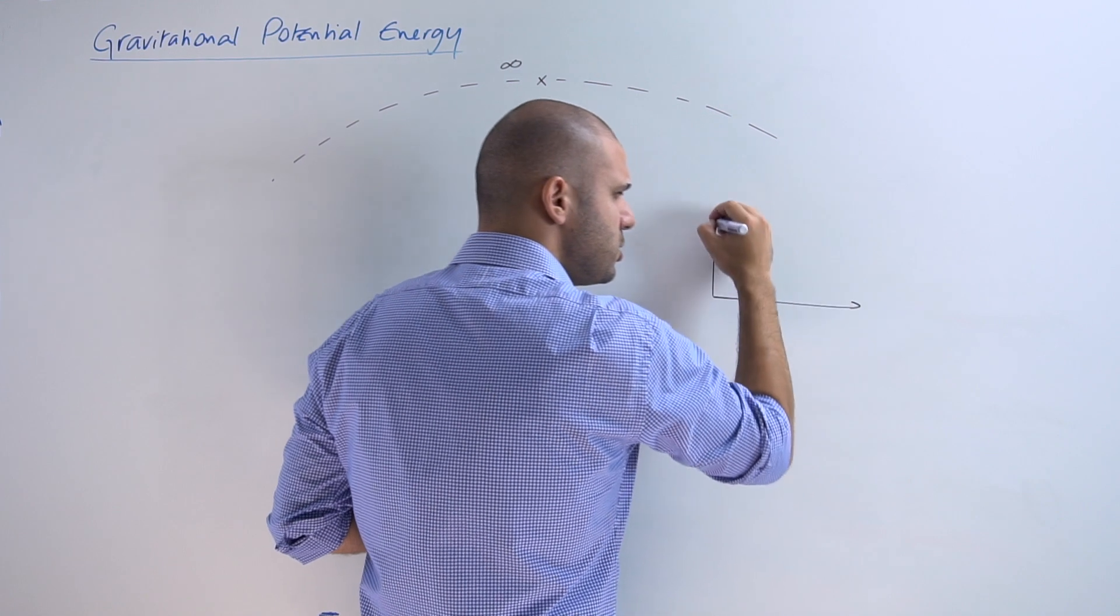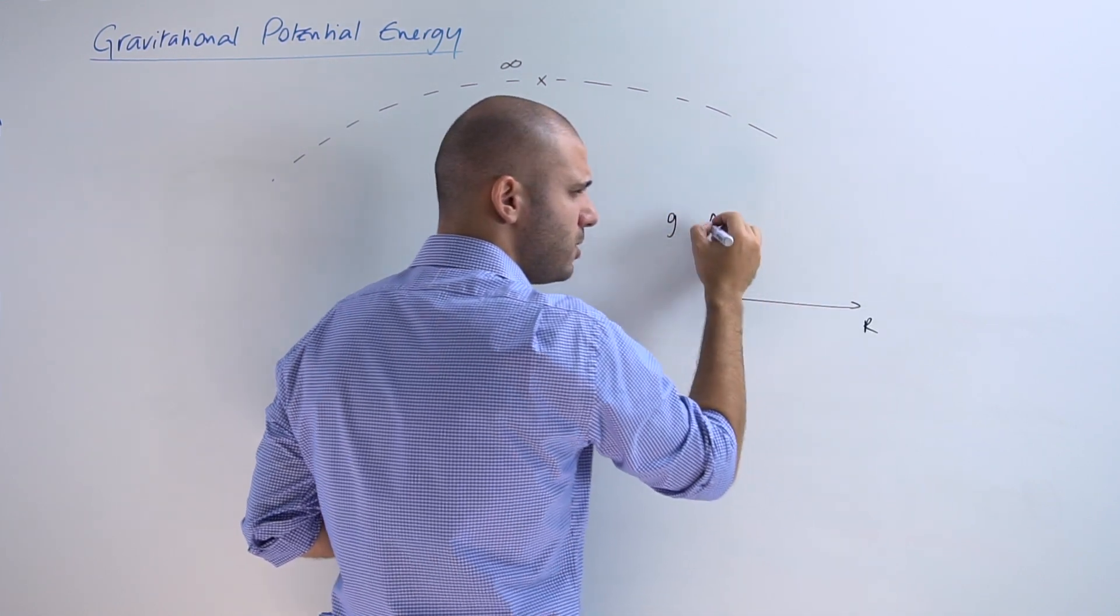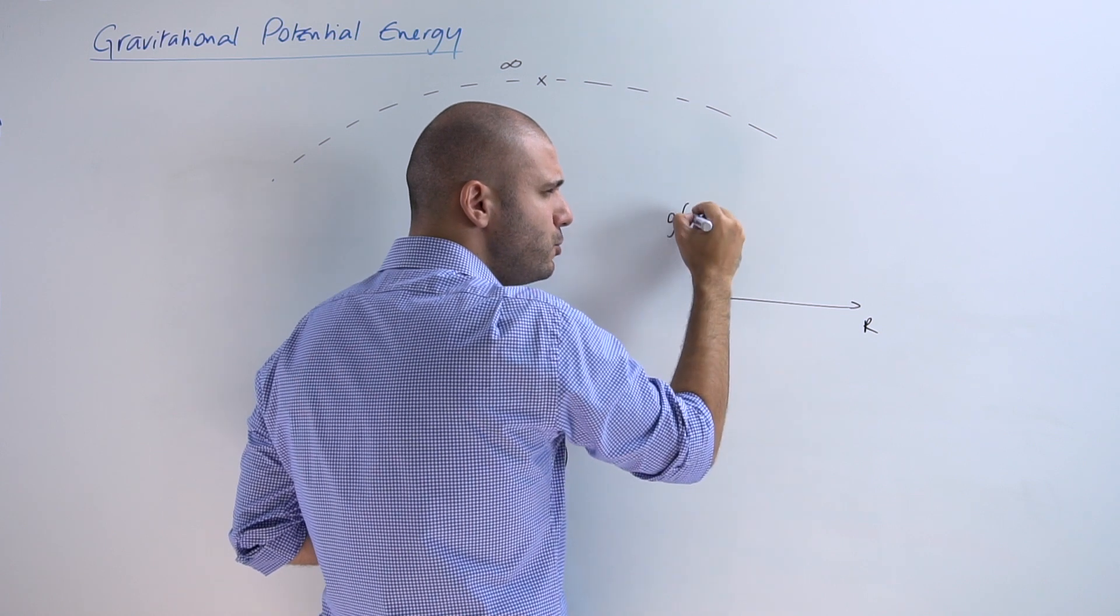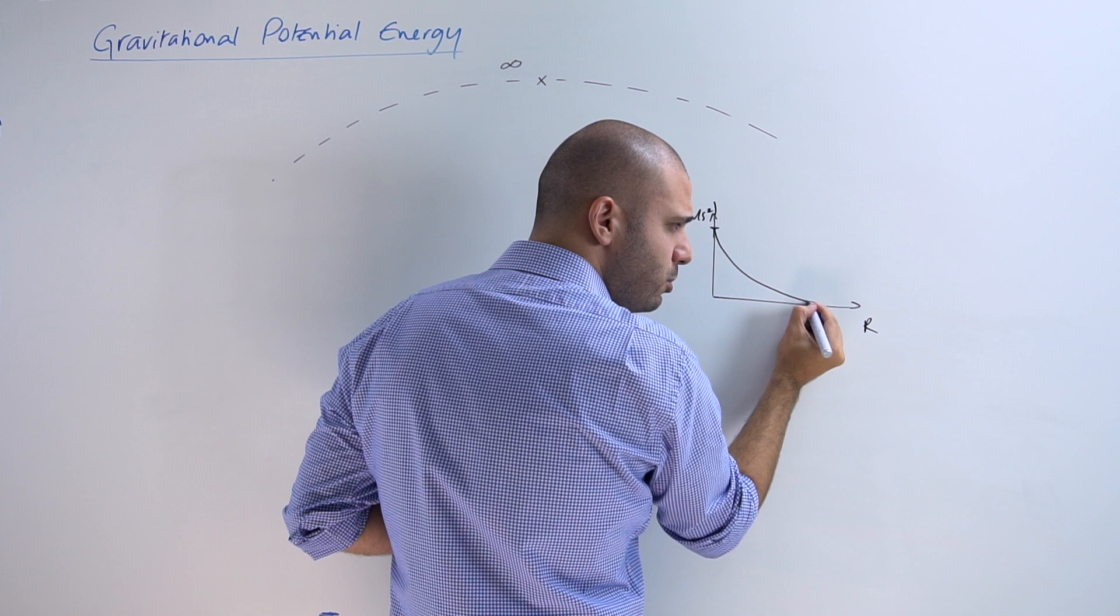At infinity, given that it is a relatively large distance away from the surface of Earth, the value of g in meters per second squared would have approached the value of zero.